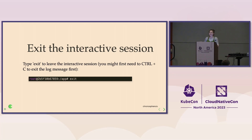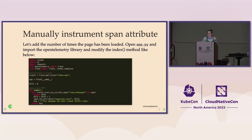We were interactively in our container — we need to get out of there. Just type exit, or on some systems you may need to Control-C out. What we did is confirm that without making any code changes, we were able to get span data automatically just by wrapping our command with the OTEL instrumentation agent.